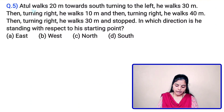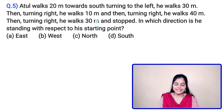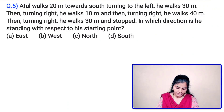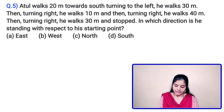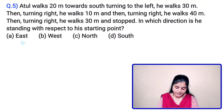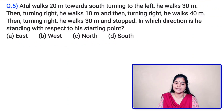Question 5: Atul walks 20 meters towards south. Turning to the left, he walks 30 meters. Then turning right, he walks 10 meters. Turning right, he walks 40 meters. Then turning right, he walks 30 meters and stops. In which direction is he standing with respect to his starting point? Option A: east, Option B: west, Option C: north, Option D: south. Solve this question and let me know your answers in the comment section.